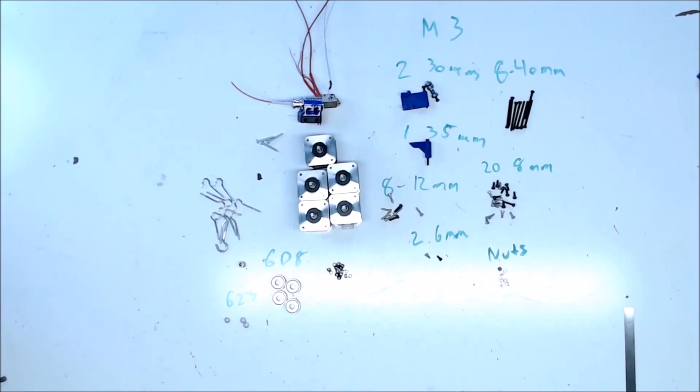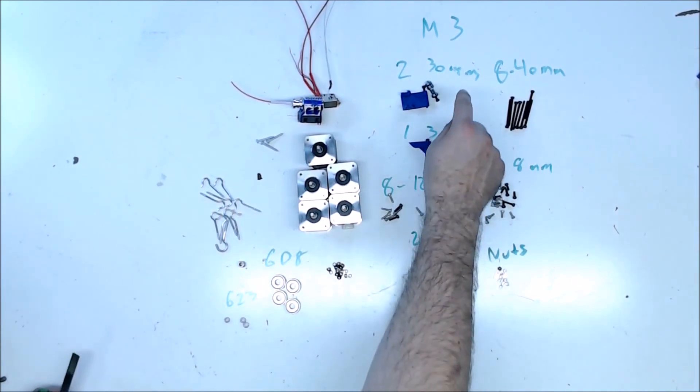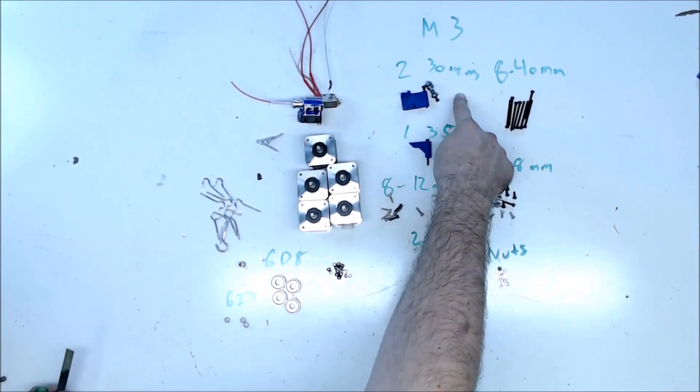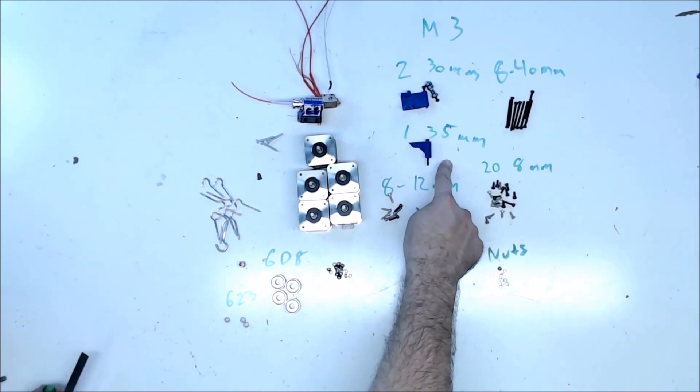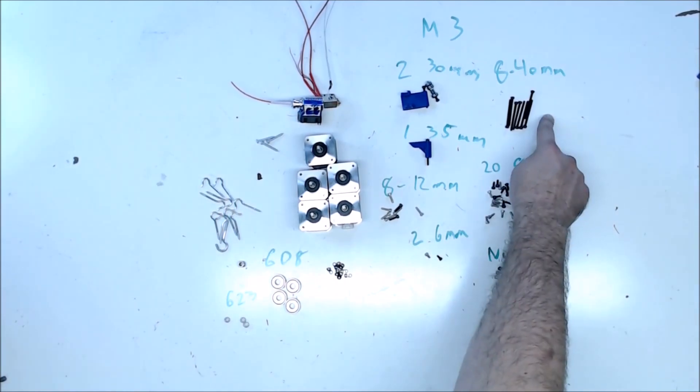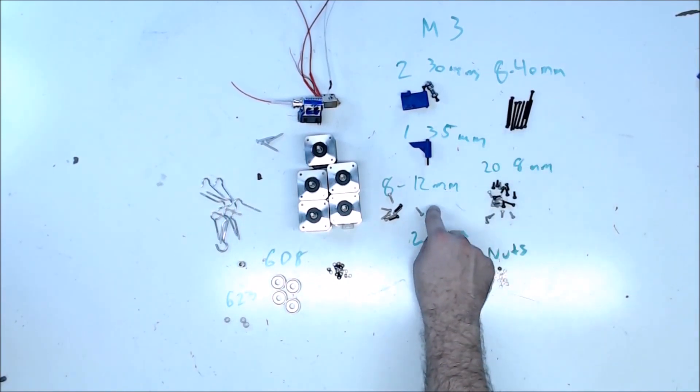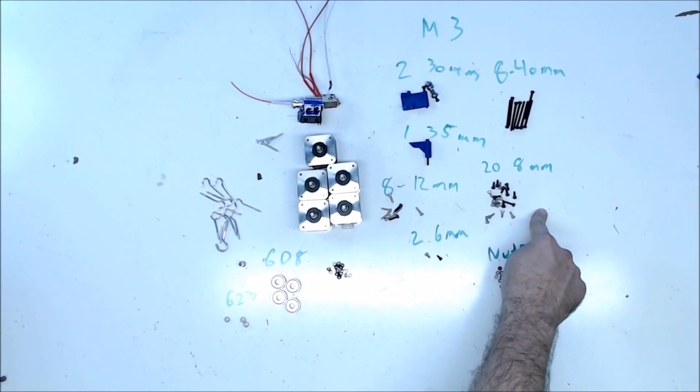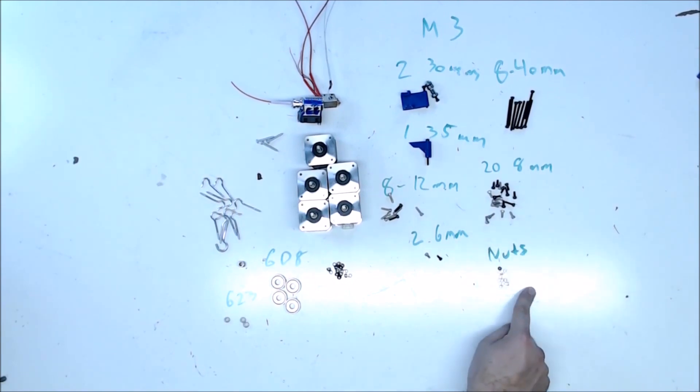Here's all the hardware you'll need to build the printer. For the extruder, you'll need two M3 30 millimeter and one M3 35 millimeter screw, and three 623 bearings. For the printer build, you'll need eight 40 millimeter M3 screws, eight 12 millimeter M3 screws, two 6 millimeter M3 screws, 28 millimeter M3 screws, and the nuts to go with them.